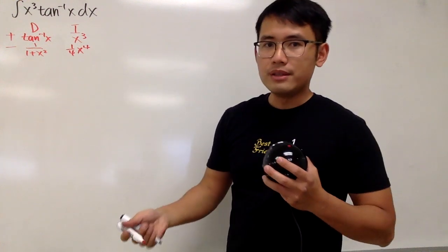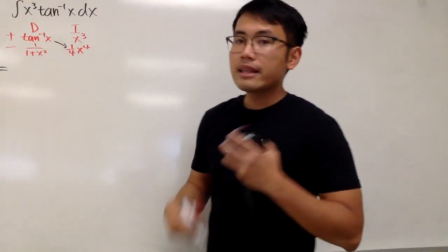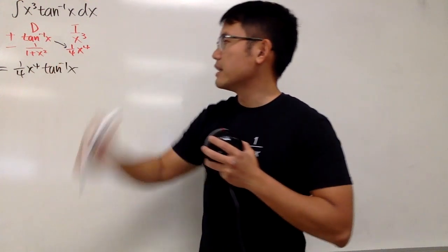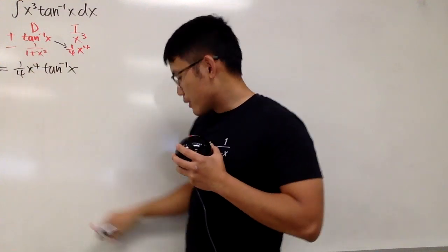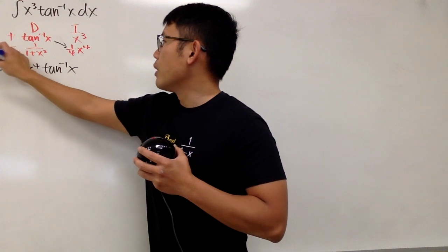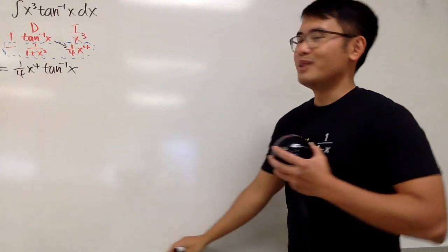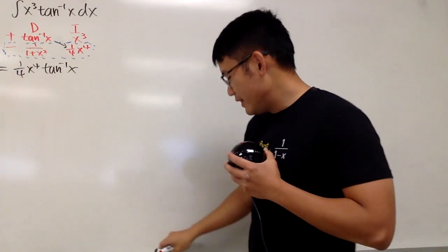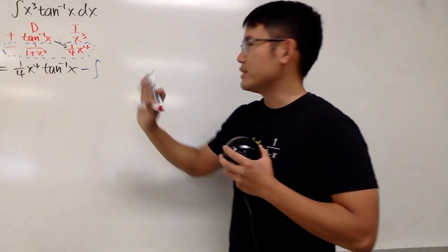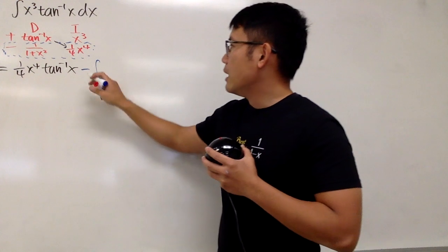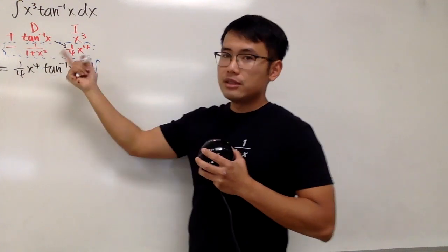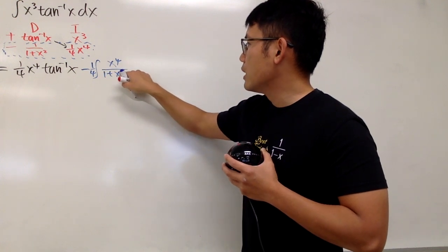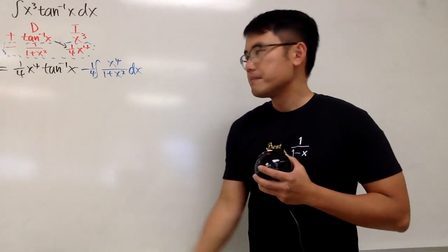Now we can put the next steps together. First, we multiply this and that — that's the first part of the answer: 1/4 x to the fourth power times inverse tangent of x. Then we multiply the second row, and remember when we multiply that row, this right here is still an integral. This row has a minus sign, so we get a negative integral. That gives us negative 1/4 times the integral of x to the fourth power over 1 plus x squared.